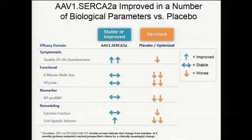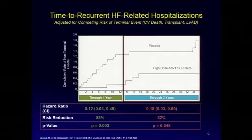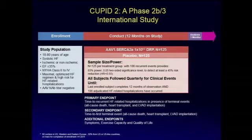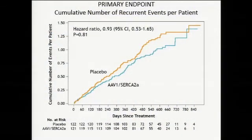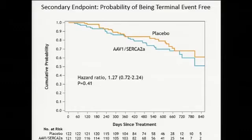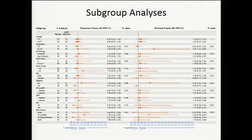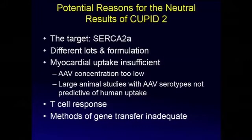The phase 2 trial showed that in patients with class 3 and class 4 heart failure, you basically stabilize or improve symptomatic functional parameters, and time to recurrent heart failure hospitalization showed improvement over a 3-year period. However, a larger trial with 125 patients across 50 international sites unfortunately did not show benefit. Even though there were some early signs the curves were separating, over time the probability of being terminal-event-free was not different between SERCA and placebo, and there were no differences in subgroup analysis.